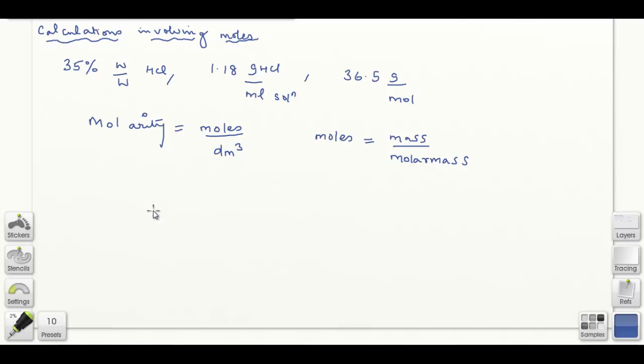Let's use the picket fence method. Starting with the percentage, it means I have 35 grams of hydrochloric acid for every 100 grams of hydrochloric acid solution. I'm going to draw vertical and horizontal bars to cancel out the units.